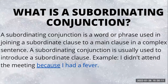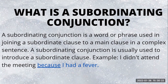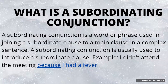What is the subordinating conjunction? A subordinating conjunction is a word or phrase used to join a subordinate clause to a main clause in a complex sentence. It is usually used to introduce a subordinate clause. For example, in the sentence 'I didn't attend the meeting because I had a fever,' the subordinate clause is 'because I had a fever,' and the word 'because' is the subordinating conjunction.